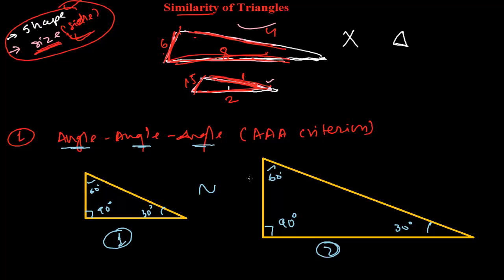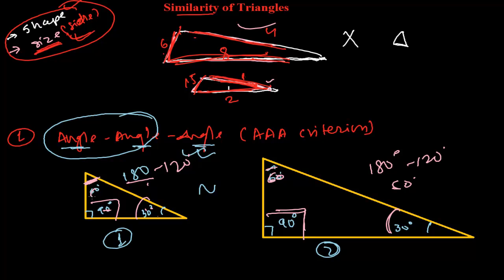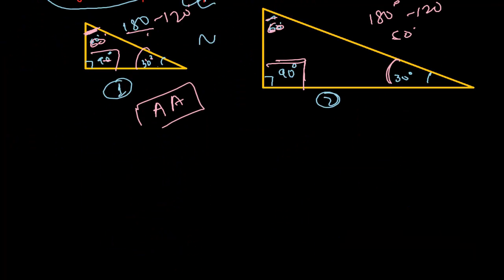One more important thing: if in any two triangles two angles are equal, the third angle is automatically equal. Since the sum is 180°, if two angles are the same — say 90° and 30° in both triangles — then 90 + 30 = 120, and 180 − 120 = 60°, so the third angle is also 60° in both. Therefore, if two angles are equal in two triangles, you can directly say both triangles are similar. Now the second criterion: Side-Side-Side (SSS).